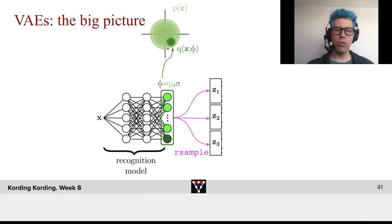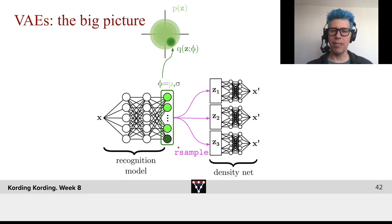And now what we'll do is we will take this distribution here, and we will sample multiple possible z's using the r-sample mechanism.